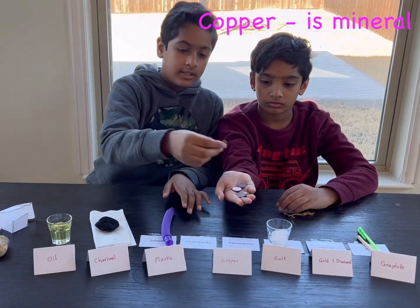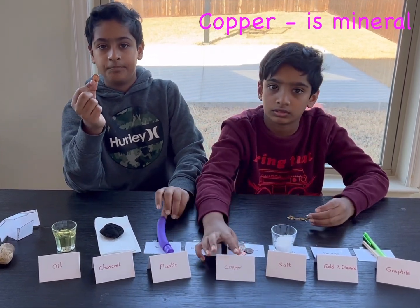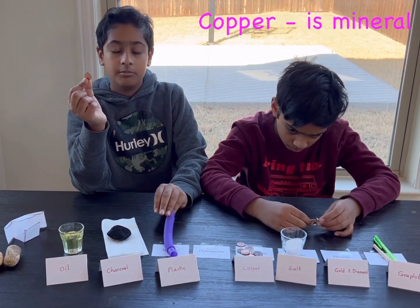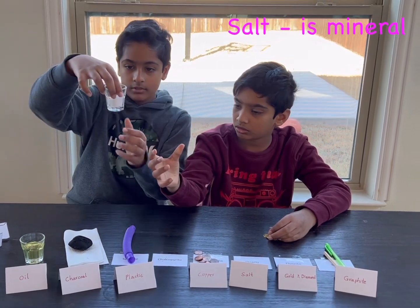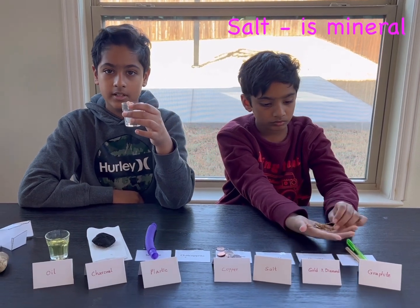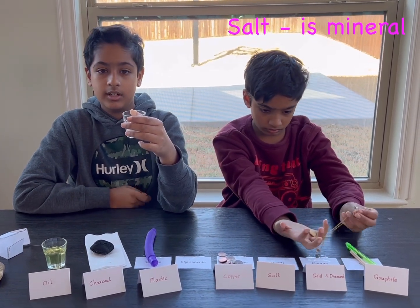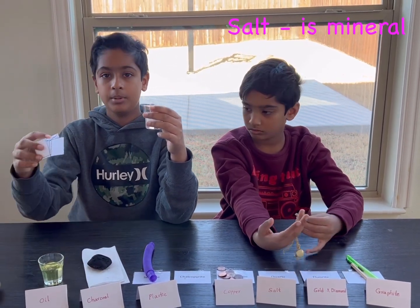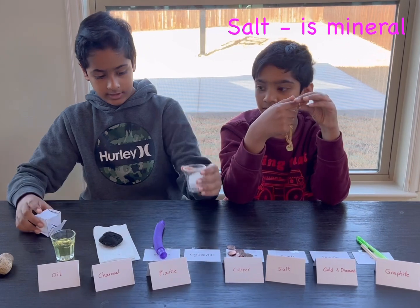Next is copper. Copper is a solid, it is naturally made, it is inorganic, it has a specific chemical structure, and it follows an atomic element called copper. Next is salt. Salt is solid, naturally made, and inorganic. It has a chemical structure, and the atomic elements inside salt are sodium and chlorine. When they go through the crystalline structure, it makes salt — and surprisingly, it is a mineral.